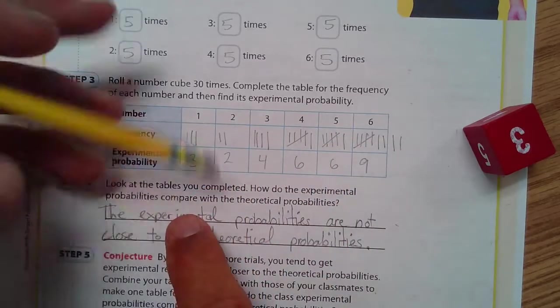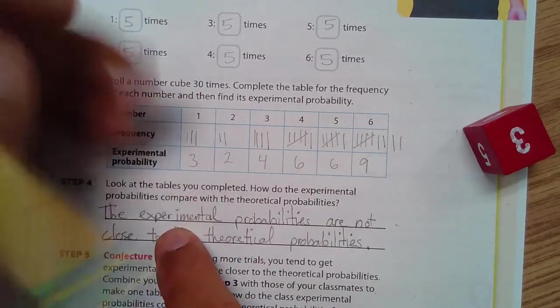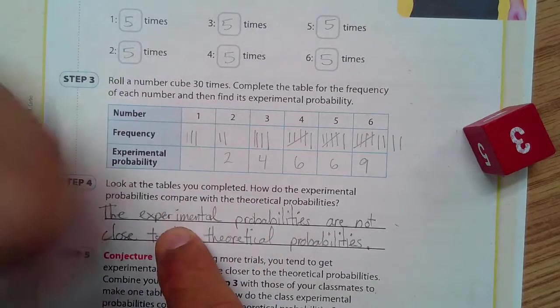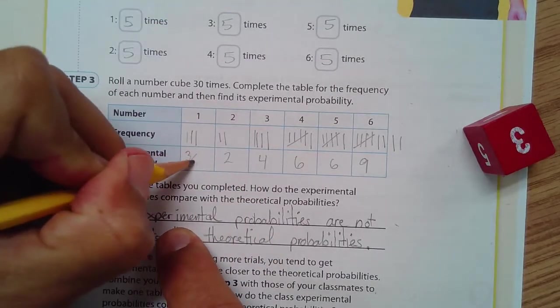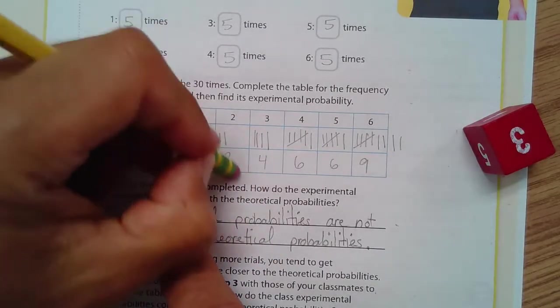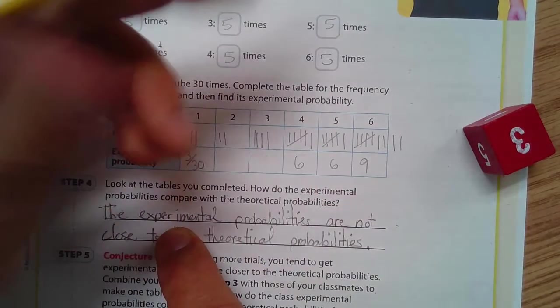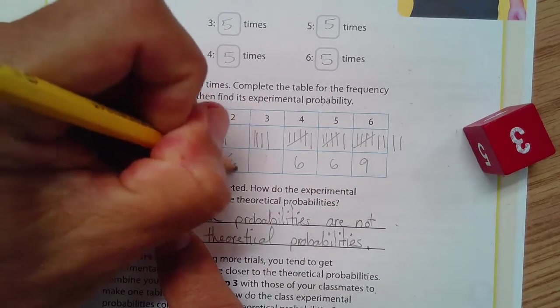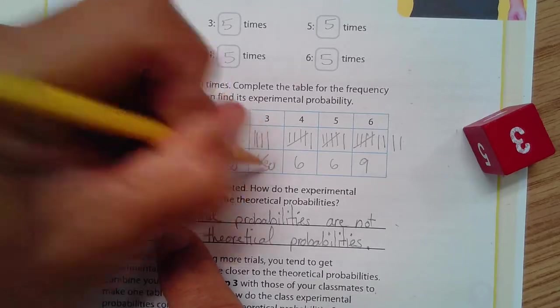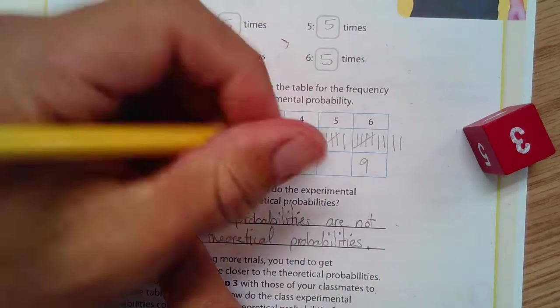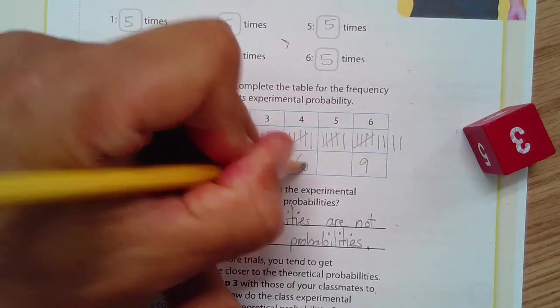The frequency, that's how many times each of them happened. And the experimental probability, well, I should have done, is 3. I should have written. That was 3 out of 30, 2, 4, 2 out of 30, 4 out of 30, 6 out of 30, another 6 out of 30, and 9 out of 30.